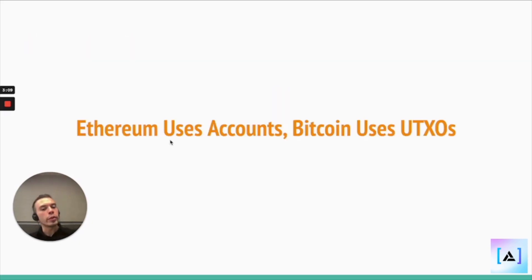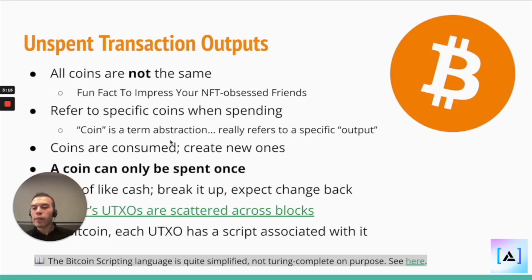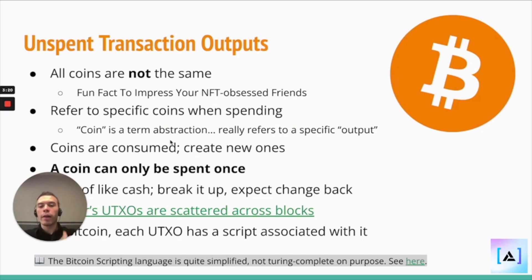So Ethereum uses accounts, Bitcoin uses UTXOs. Just to define UTXOs — it's a very different model, where it keeps track more of the specific denominations that got you to your overall balance.